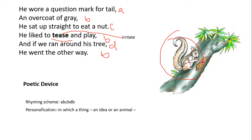Here, he is used for the squirrel. He, he, and he, again he. So, here the personification in which a thing, an idea or an animal is given human attributes. Here, he is used for the squirrel.